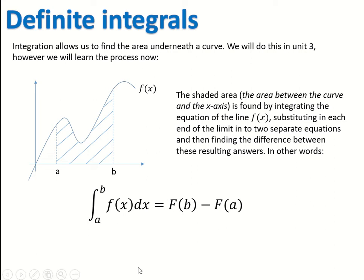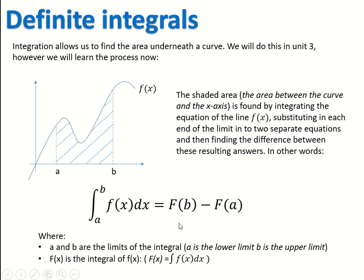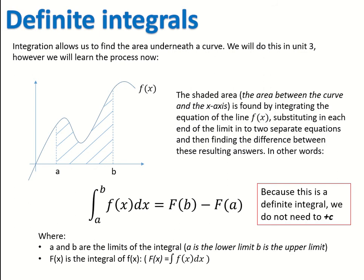We do the integral — that'll basically be F of x — and then we substitute in the ends of those intervals into two individual equations, and then take them away to find the area underneath. Just now we're going to focus on the process behind it, the numbers behind it, and not worry too much about the context. Because this is a definite integral and we know precisely what the value is, we don't need to add the plus c at the end. Whenever you're finding a definite integral — if you have a number at the top and bottom — you don't need your plus c. What we're trying to get at the end of this whole process is just a number.